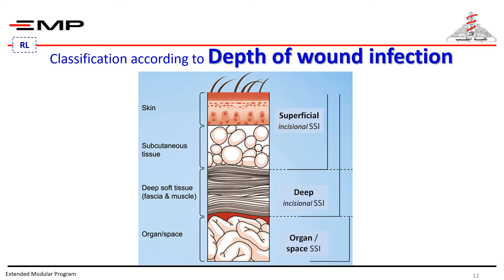Surgical wounds are classified according to the depth of wound infection into: superficial, where infection involves only the skin and subcutaneous tissue of the incision; deep infection, involving deep tissue such as fascia and muscle layers, including infection involving both superficial and deep incision sites and organ spaces draining through the incision; and organ space surgical site infection, involving any part of the anatomy in organs and spaces other than the incision which was opened or manipulated during operation.